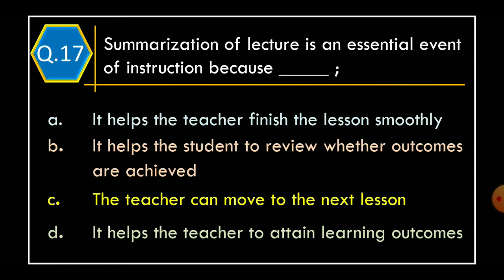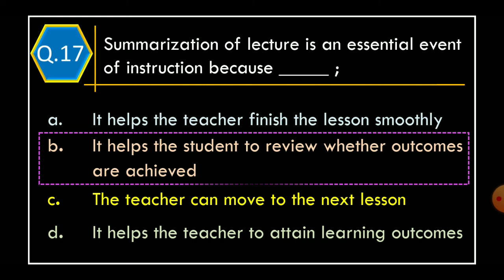Question 17. Summarization of the lecture is an essential event of instruction because: Option A. It helps the teacher finish the lesson smoothly. Option B. It helps the student to review whether outcomes are achieved. Option C. The teacher can move to the next lesson. Option D. It helps the teacher to attain learning outcomes. The correct option is Option B: It helps the student to review whether outcomes are achieved.